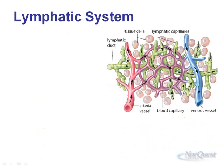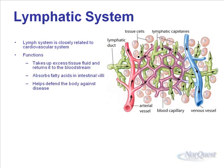Here's an example of what the lymphatic ducts look like. As you can see, they're dead-end ducts. Unlike the arterioles and venules, the lymph vessels are closed at one end. It's closely related to the cardiovascular system — it takes up that extra tissue fluid and returns it to the bloodstream. It's also involved in the absorption of fatty acids in the intestinal villi, which were the lacteals we talked about in the digestive system. It also helps defend the body against disease.